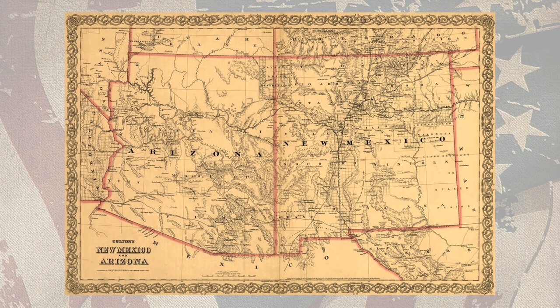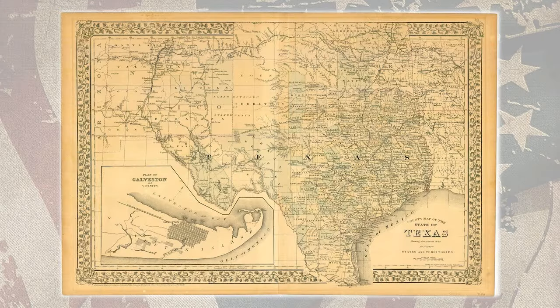Stanley served as commander of the Department of New Mexico from November 3, 1883 to May 1, 1884. While there, the Army promoted him to the rank of Brigadier General on March 24, 1884. On May 8, 1884, officials appointed Stanley as the commander of the Department of Texas. Eight years later, on June 1, 1892, Stanley retired from active service.